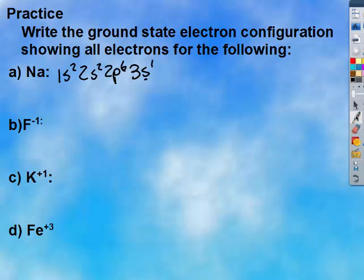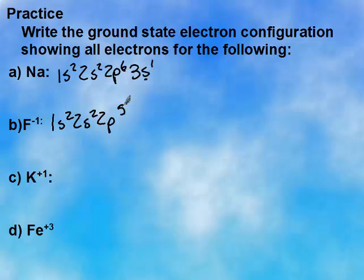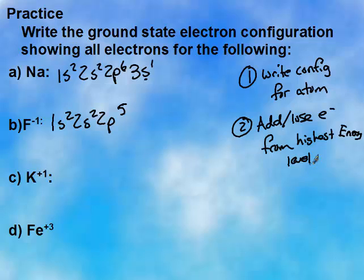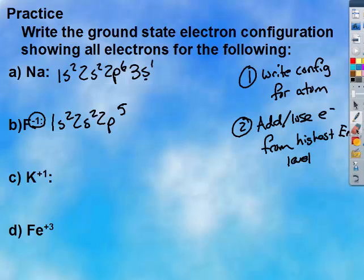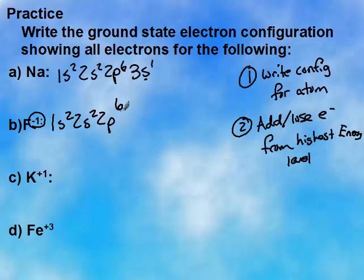To do the electron configuration for an ion, first thing you need to do is write the configuration for the element. So fluorine's electron configuration is 1s2, 2s2, 2p5. So first you write it for the atom. Then we're going to add or lose electrons from the highest energy level. So my highest energy level is 2p5. And since it's a negative 1, it gains an electron. So this 5 turns into a 6. So now fluorine has 10 electrons, which corresponds with fluorine minus 1.